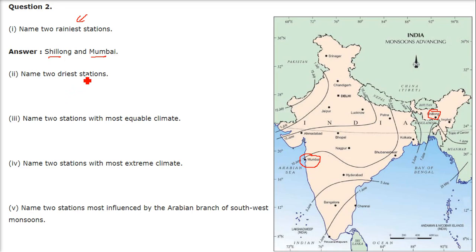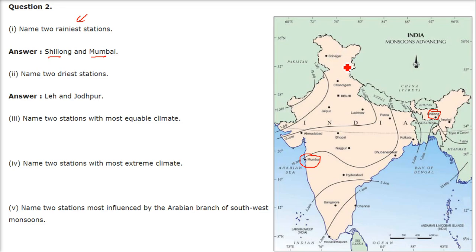Name two driest stations — means the least rain. The answer is Leh and Jodhpur. Jodhpur comes in Rajasthan, and Rajasthan, as we know, has the Thar Desert — it is the driest place. Then we have one more driest place which is the Ladakh region. It's a cold desert, and we have Leh here.